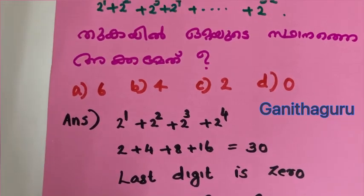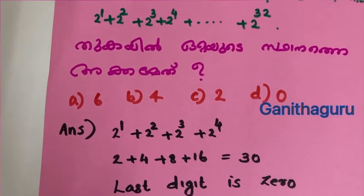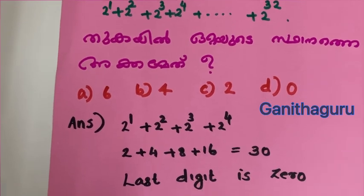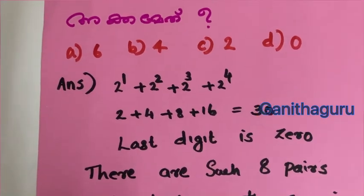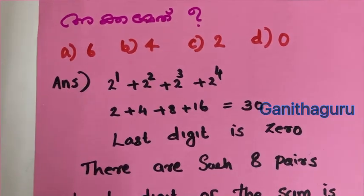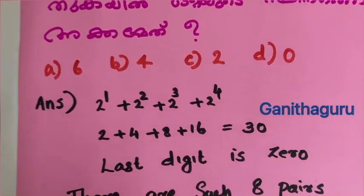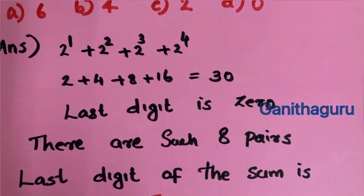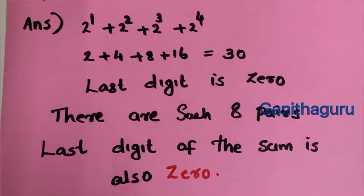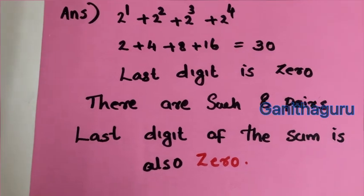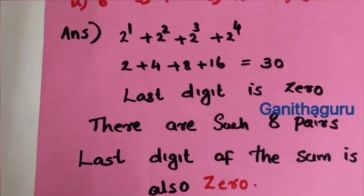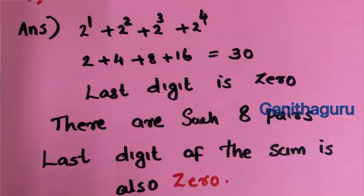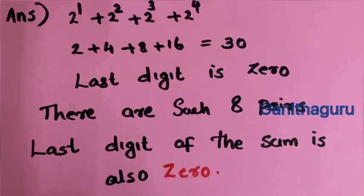Looking at 2 raised to 32: 32 divided by 4 gives 8. There are 8 pairs of 4 consecutive powers. The last digit of each group of 4 powers is zero, so the overall last digit is also zero. Answer is zero.